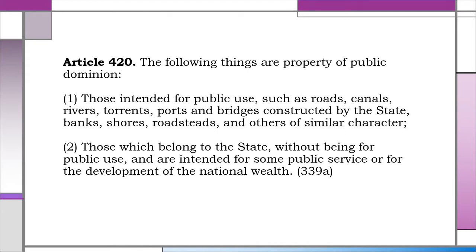There are three kinds of property of public dominion. One, for public use, like canals and roads, which may be used by anybody. Two, for public service, like national government buildings, army rifles, and army vessels, which may be used only by duly authorized persons. And three, for the development of national wealth, like our natural resources.